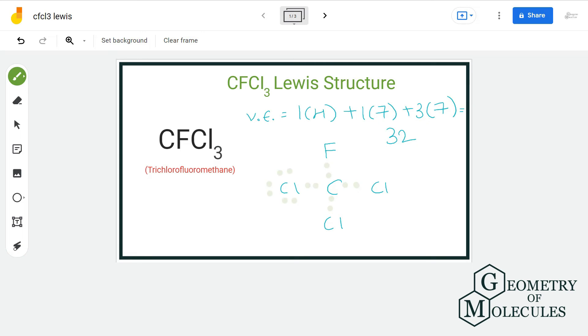Now doing that, we have used all our valence electrons and each atom in this Lewis structure has complete outer shell and zero formal charge. So this is the final Lewis structure of CFCl3.